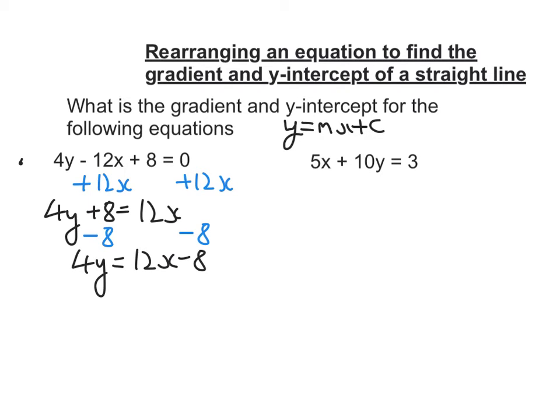So I've got all the other terms on the other side. I still have a 4 here, so I'm going to have to divide everything by 4. And I get y is equal to 3x minus 2.